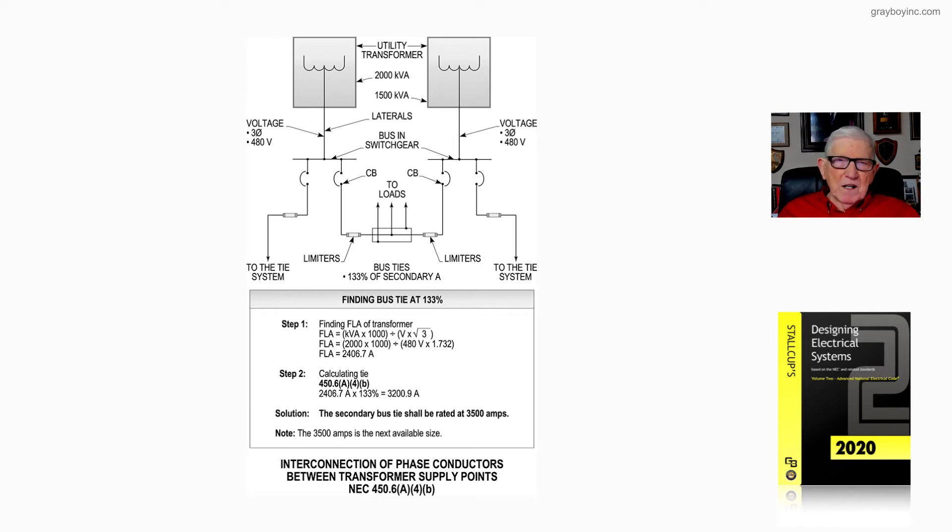Now the application of 450.6(A)(4)(b), we take the 2,406.7 amps times 133%, and we come up with a value of 3,200.9 amps.